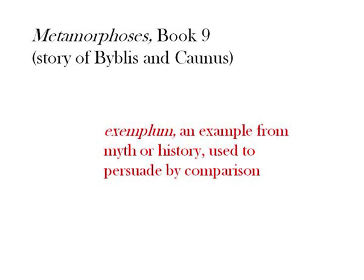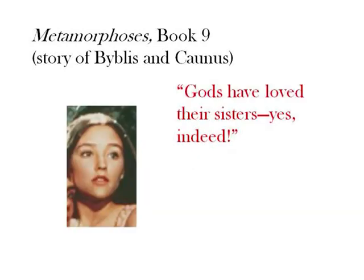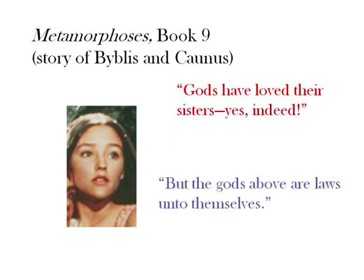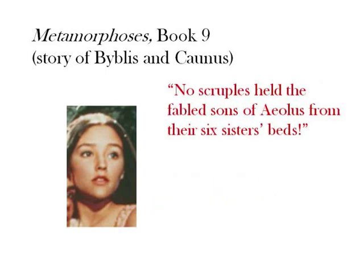Byblis is here trying to persuade herself that she should go after her brother. 'What do my dreams portend? What weight have dreams? Do dreams have weight at all? The gods forbid, yet gods have loved their sisters. Yes, indeed, why, Saturn married Opes, his kin by blood, and Ocean Tethys, and Olympus' lord, Jove, married Juno. But the gods above are laws unto themselves. Why try to fit the different rules of heaven to modes of men? This flame I'll force forbidden from my breast, or if I fail, oh, let me perish first, and as I'm laid dead on my bier, then let my brother kiss me. Yet for what I want, two minds must meet. Suppose it brings delight to me, it must be sinful in his sight. But then no scruples held the fabled sons of Elis from their six sisters' beds. How do I know these stories? Why so pat these precedents? What will become of me?'